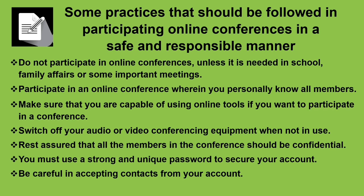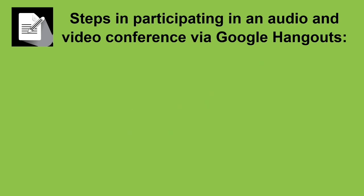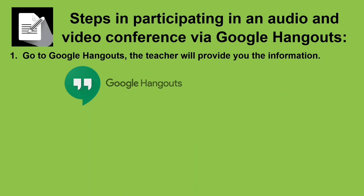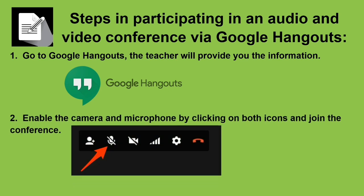Here are the steps for participating in an audio and video conference via Google Hangouts. First, go to Google Hangouts — your teacher will provide the information. Next, enable the camera and microphone by clicking on both icons and join the conference. Once the conference starts, turn off your camera and microphone so they will not interfere with the presentation.